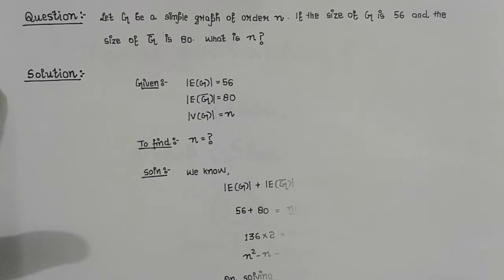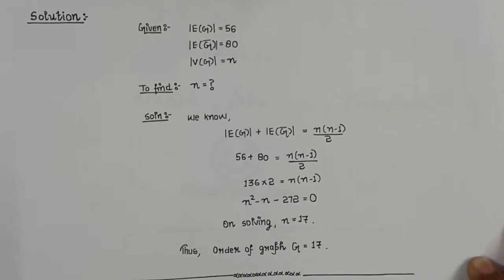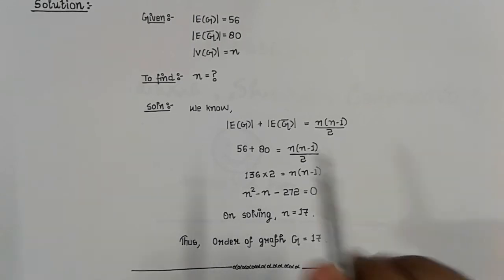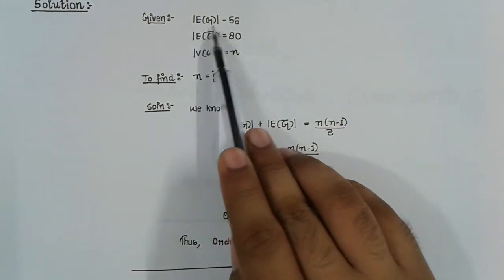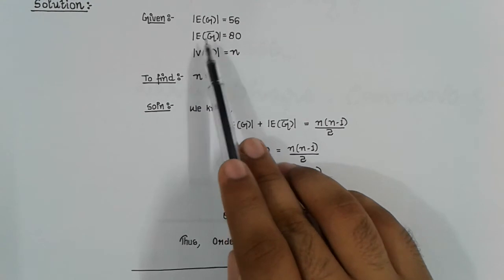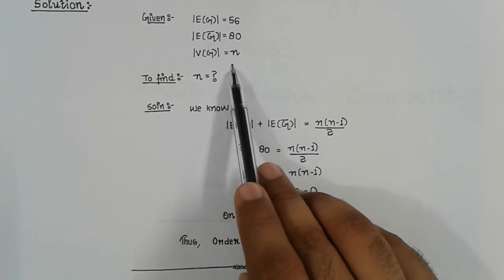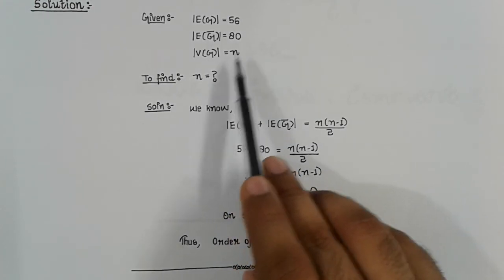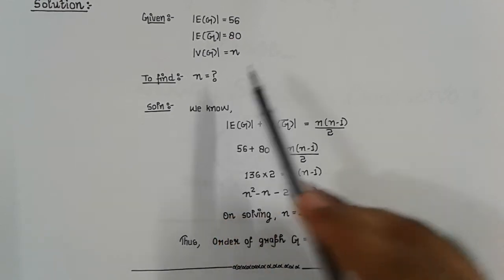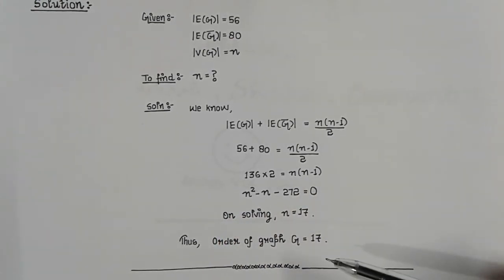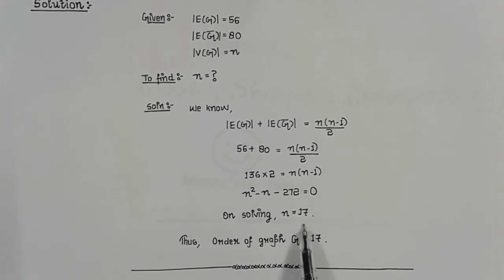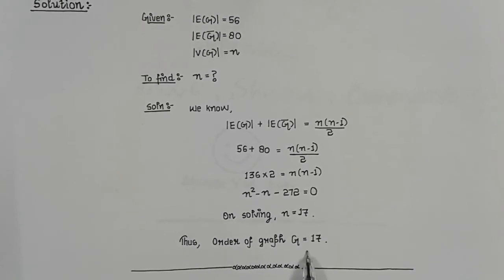So let us solve it. We have been given: number of edges in G equals 56, number of edges in G-bar equals 80, and we need to find N. Using the same relation and solving, the total number of vertices in graph G is 17, or we can say that the order of graph G is 17.